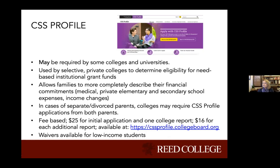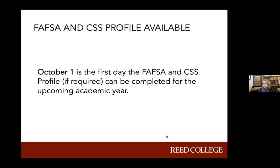The first day that the FAFSA and CSS profile applications will be available is October 1st. What's really important is to look at the college's websites to find out what their priority financial aid application deadlines are. At Reed, for regular decision students, we would want them to complete their CSS profile and FAFSA by January 15th. It's really important that you find out what the deadlines are at each of the colleges so you don't miss out because you missed a deadline. Applications are available starting October 1st.